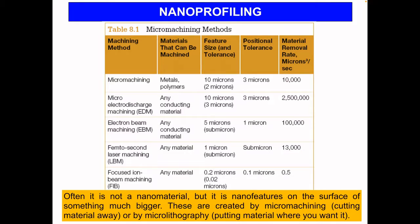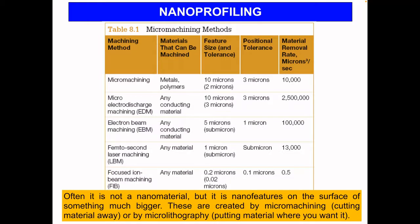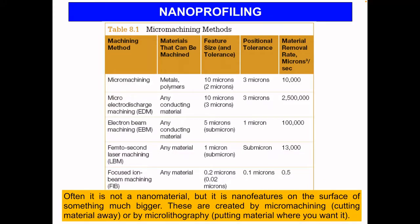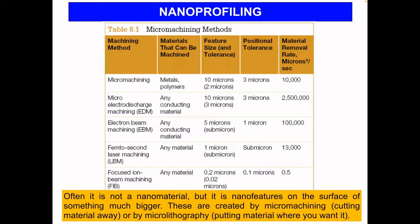There's already a process called lithography, and we're going to focus on nano lithography. This course's details will be taught in more detail by Kuan Hoca towards the end of the semester, but I'll summarize the general concepts here. Often it's not a nanomaterial itself, but rather nano features on the surface of something much bigger. In nanotechnology, these are created by micromachining — cutting material away — or micro lithography, which is putting material where you want it.